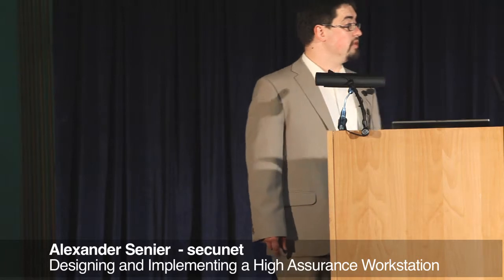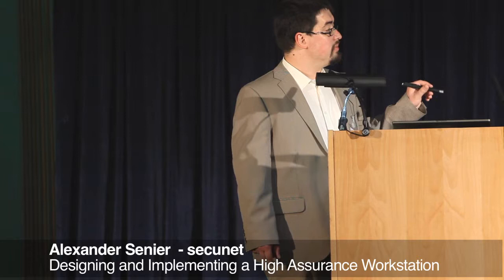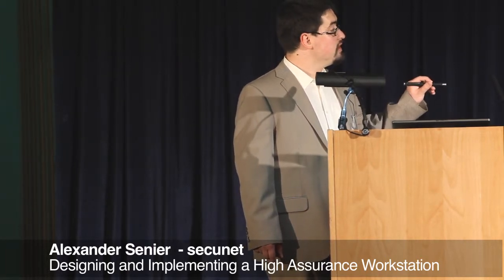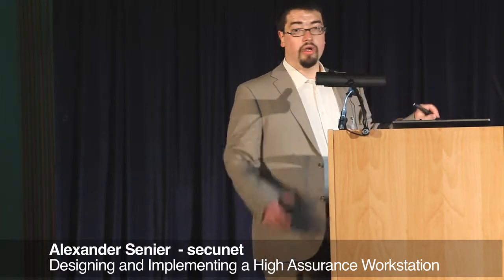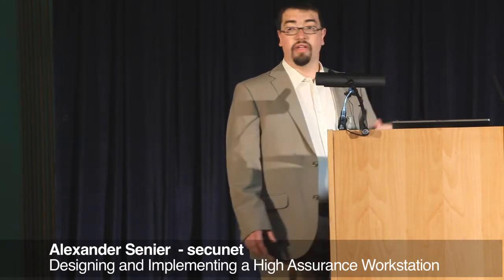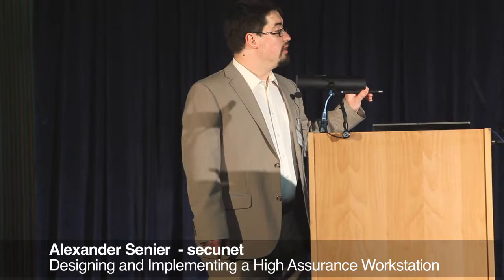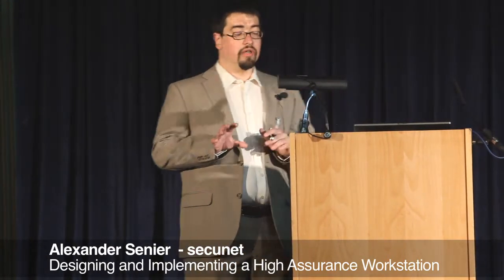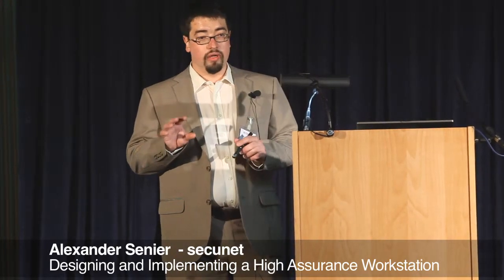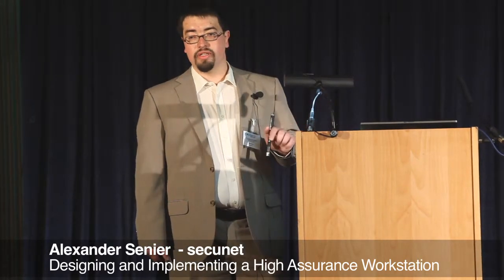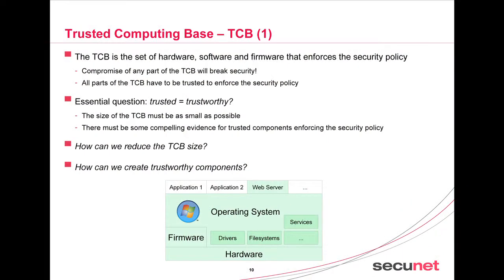One example of what the TCB looks like is a monolithic system. In such a system, the trusted parts — shown in green — include the web server, the operating system with all privileged services, file systems, drivers, firmware, and hardware. If you have a web server and want to determine the trusted computing base — meaning what parts of the system must be trusted for the web server to enforce its security policy, for example not granting access to a specific file — you have to trust all of these. That amounts to many millions of lines of code.